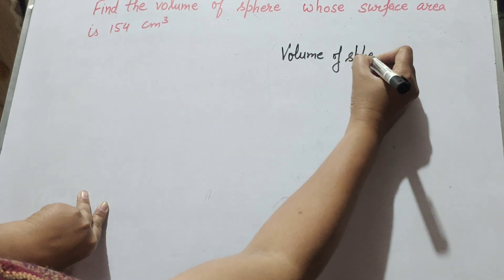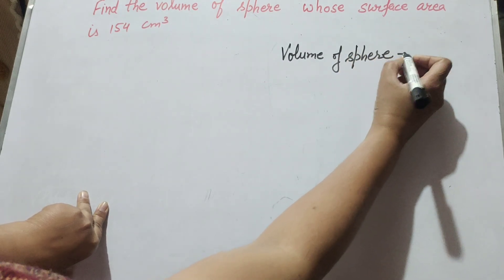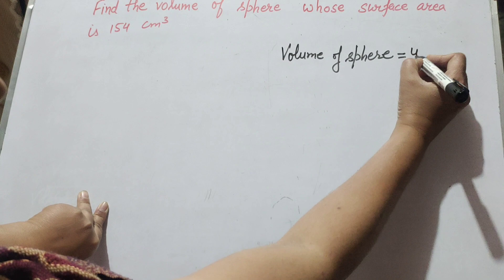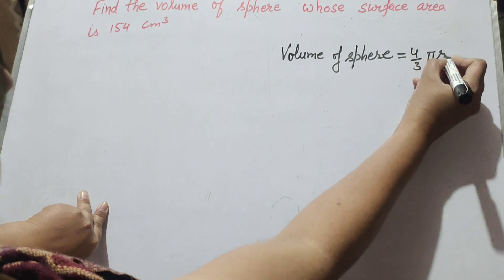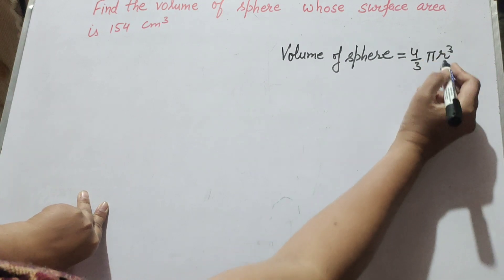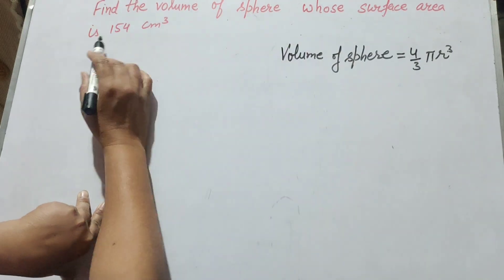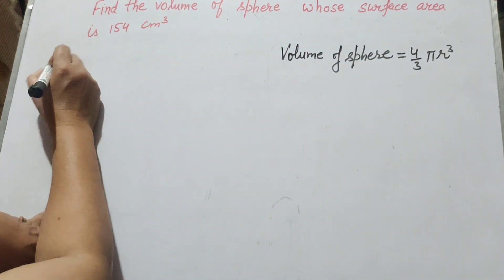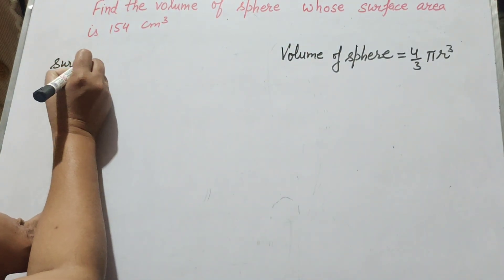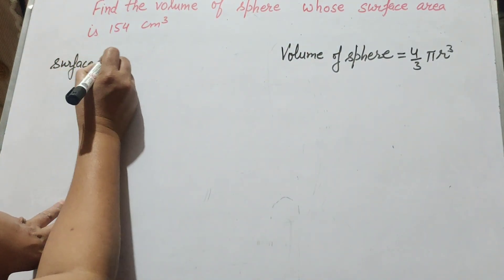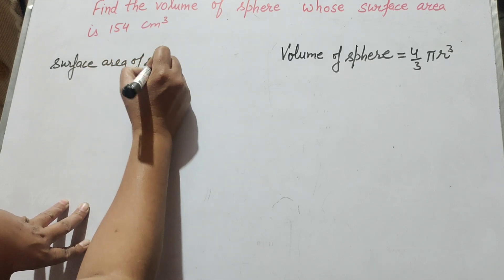We know the formula to find the volume of a sphere — it is 4 over 3 pi r cube, where r is the radius. But what is given is the surface area of the sphere.